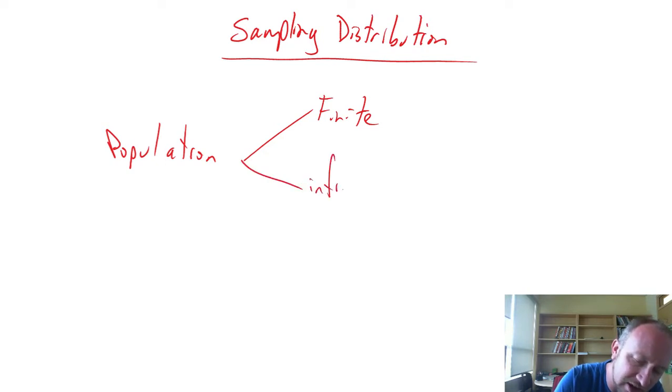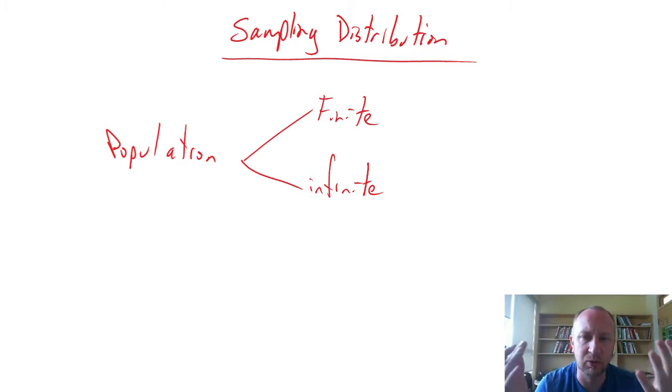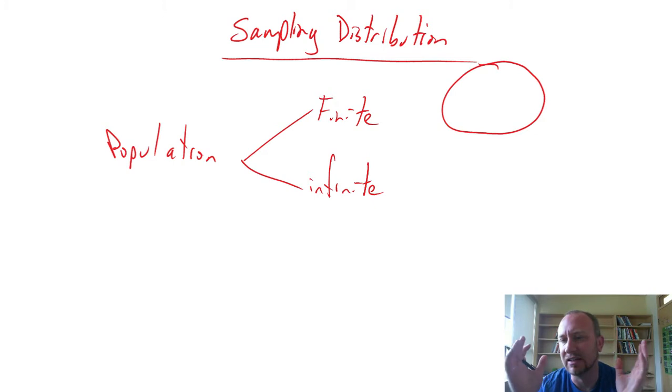Or, we could consider an infinite population. In which case, maybe we're looking at all of the students at the university since the university began. So, there's students coming in, there's students who are leaving, and there's always this churn of new graduates being put out. Or, like a manufacturing line. We're manufacturing over time. There's no upper limit to that number. So, a finite population, there's a prescribed maximum number. An infinite population could be a process that's taking place over time.